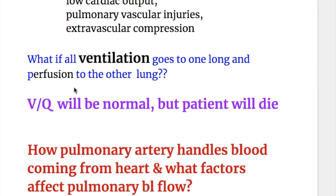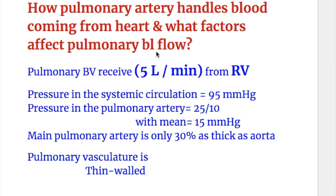Pulmonary blood vessels receive five liters of blood per minute from the right ventricle — five liters being the cardiac output. Pressure in the systemic circulation is 95 mmHg, whereas pressure in the pulmonary artery is 25/10 with a mean of 15 mmHg. The main pulmonary artery is only 30% as thick as the aorta.